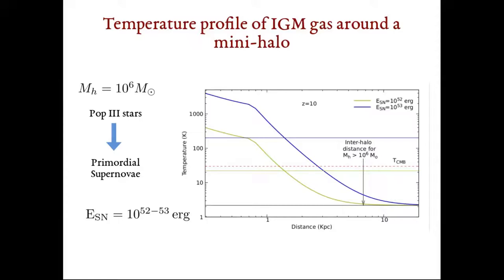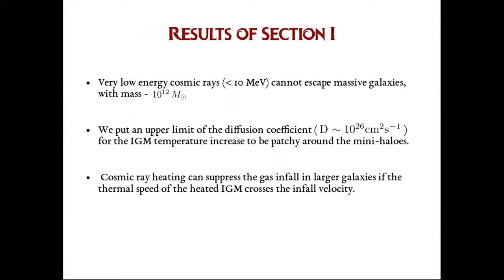Using a power-law spectrum, we calculated the temperature profile, and the green and blue curve here shows the temperature profile around such a mini-halo at redshift of 10 depending upon the supernova energy. The green and blue horizontal lines here show the estimate by Sazonov. We decided to call the heating homogeneous if the global mean temperature increase estimated by Sazonov crosses our local temperature average within the inter-halo distance. In that way, we put an upper limit on the diffusion coefficient for the heating to be inhomogeneous. We found that the limiting value of the diffusion coefficient is in the order of 10 to the power 26 cm squared per second for the redshift range of 10 to 20.